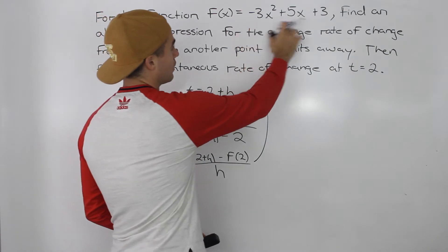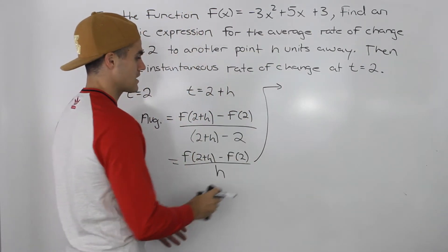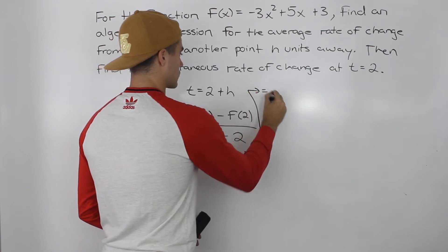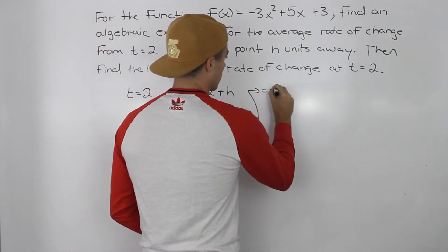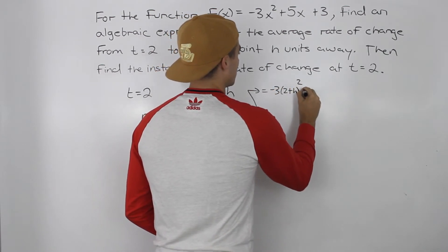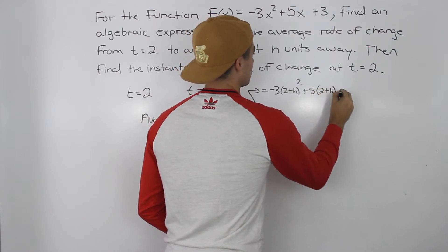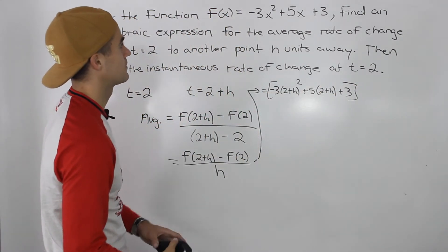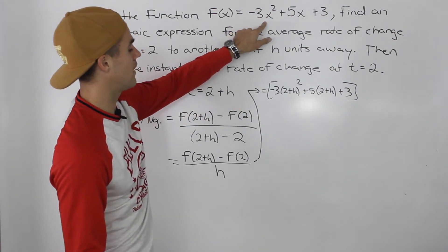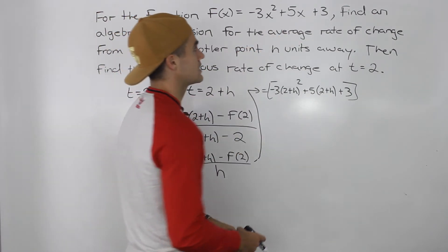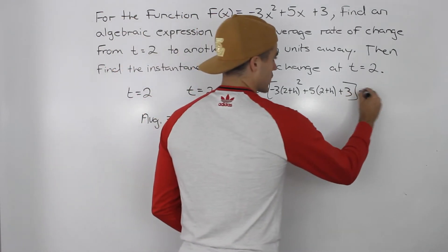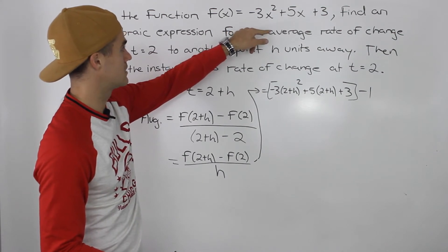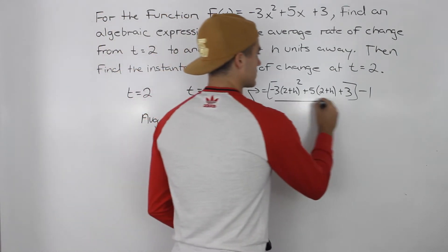f of 2 plus h requires plugging in 2 plus h for all of the x values in the function, giving us negative 3 times (2 plus h) squared plus 5 times (2 plus h) plus 3. And f of 2: 2 squared is 4 times negative 3 is negative 12, plus 10 is negative 2, plus 3 is 1. So f of 2 equals 1, meaning we'll be subtracting 1, and this is all over h.